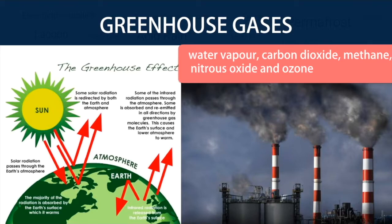Without greenhouse gases, the average temperature of Earth's surface would be about minus 18 degrees Celsius, rather than the present average of 15 degrees Celsius.